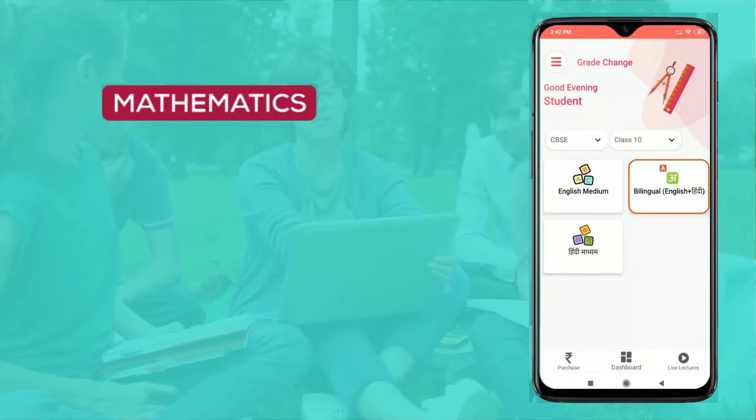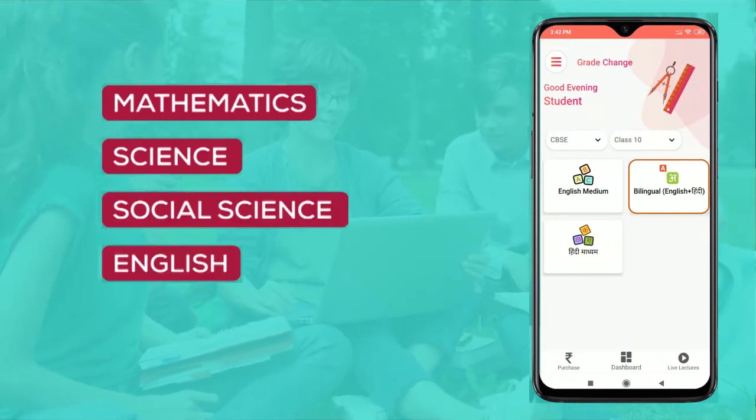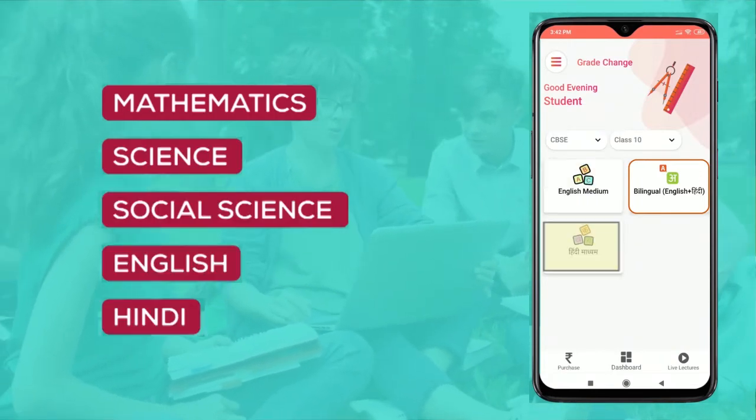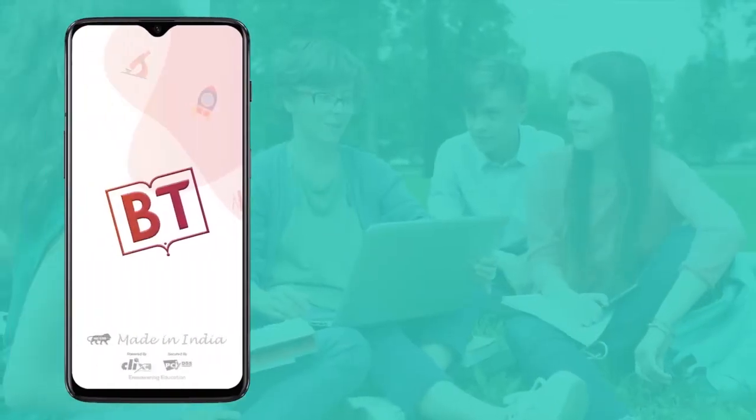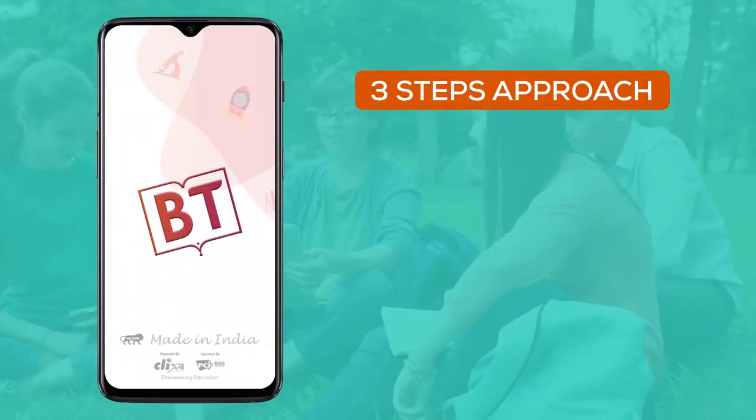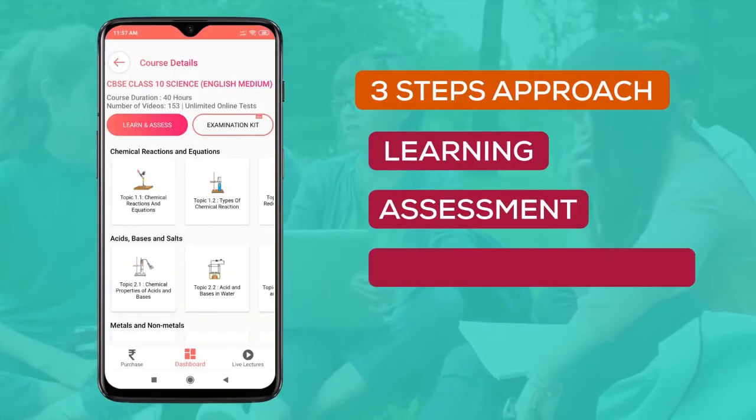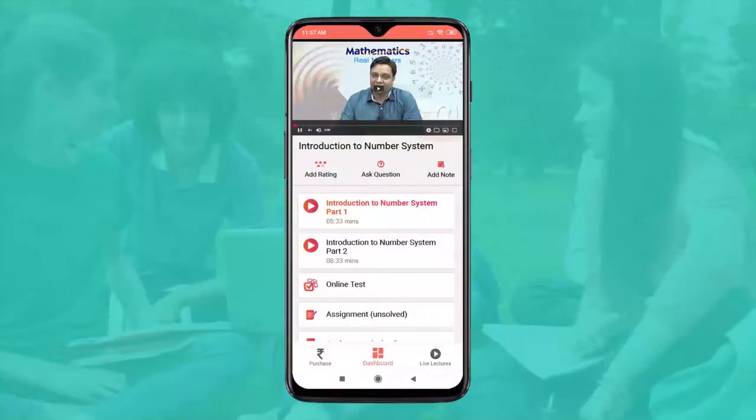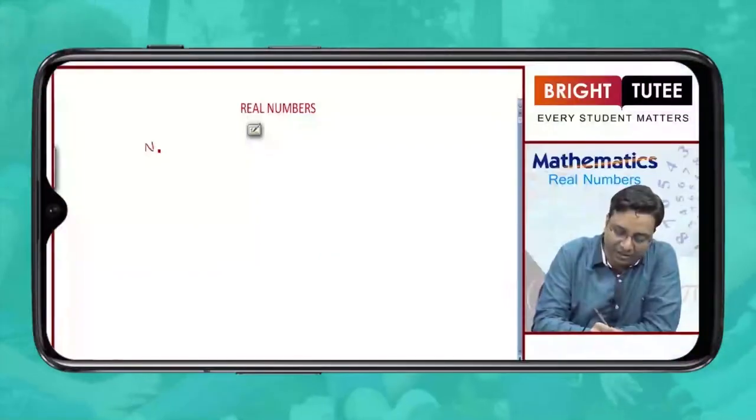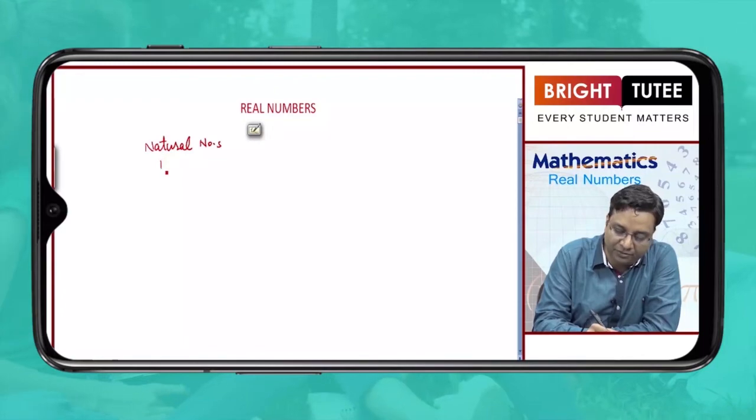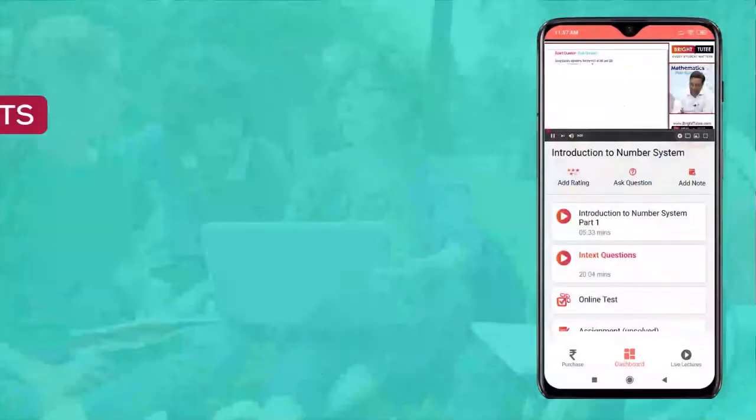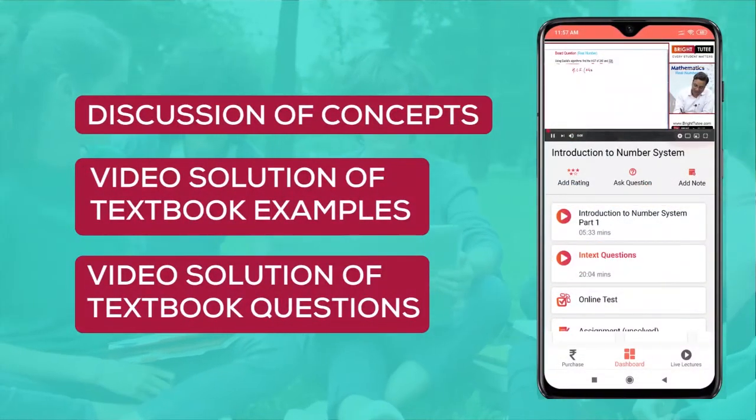Bright Tutee courses are available for the subjects of Math, Science, Social Science, English and Hindi in English and Hindi medium. Bright Tutee follows three-step approach that is learning, assessment and exam preparation. In learning, topic-wise video lectures with explanation of concepts and discussion of textbook examples and questions are available with the solutions.